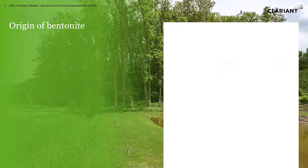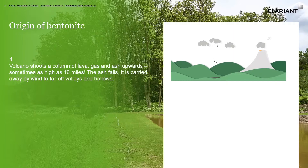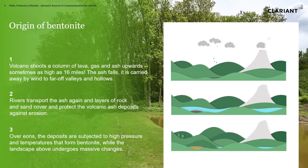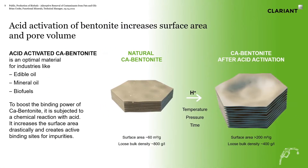Very briefly, we're going to look at the origin of bentonite. Clariant produces bentonite products as bleaching clays. Years ago, volcanoes shot up lava with gas and ash that sometimes traveled as much as 16 miles. As the ash falls, it gets carried by wind and water. Over time, those deposits are subjected to high pressure and temperatures to form bentonite. What's left behind is the calcium bentonite products that are then processed to make bleaching clays.